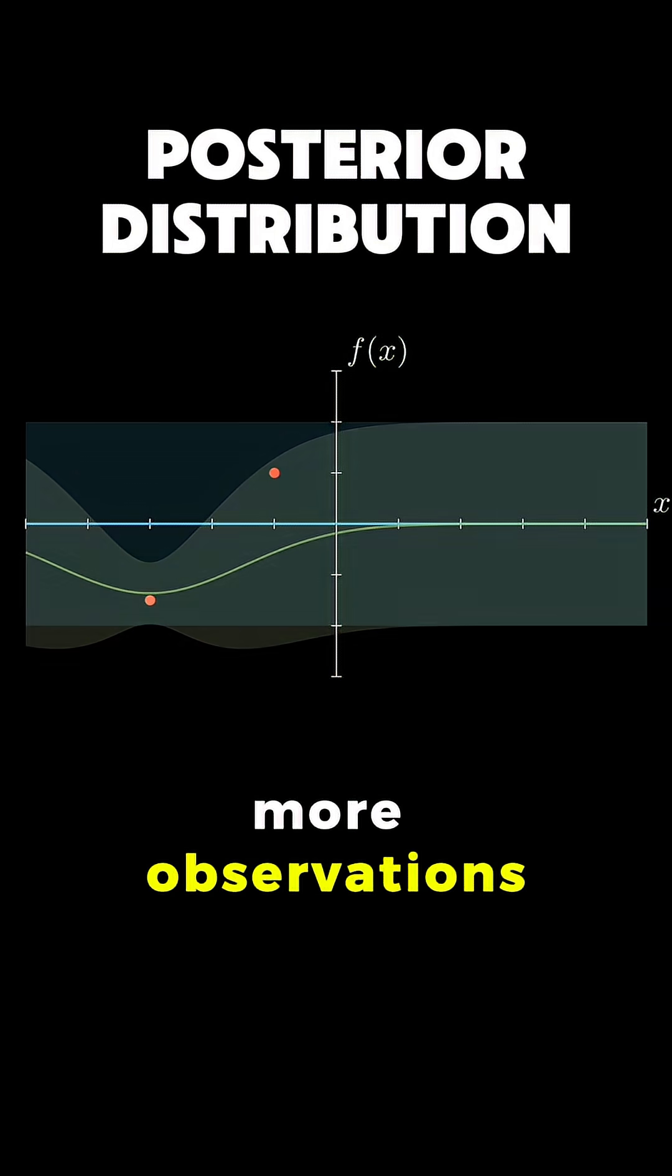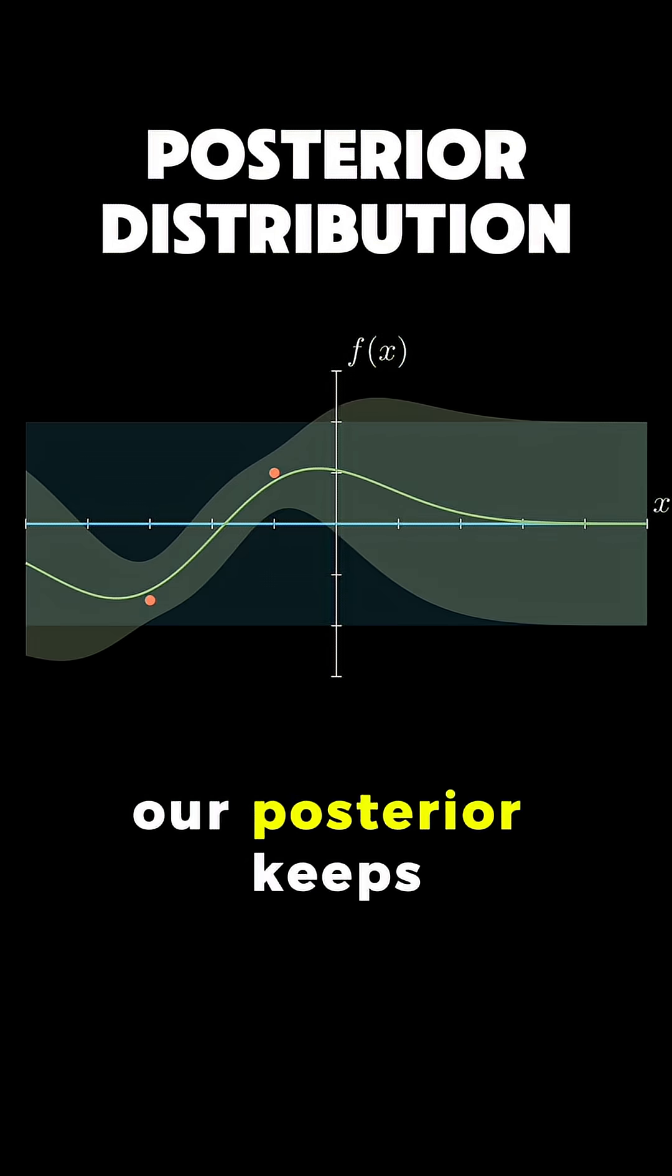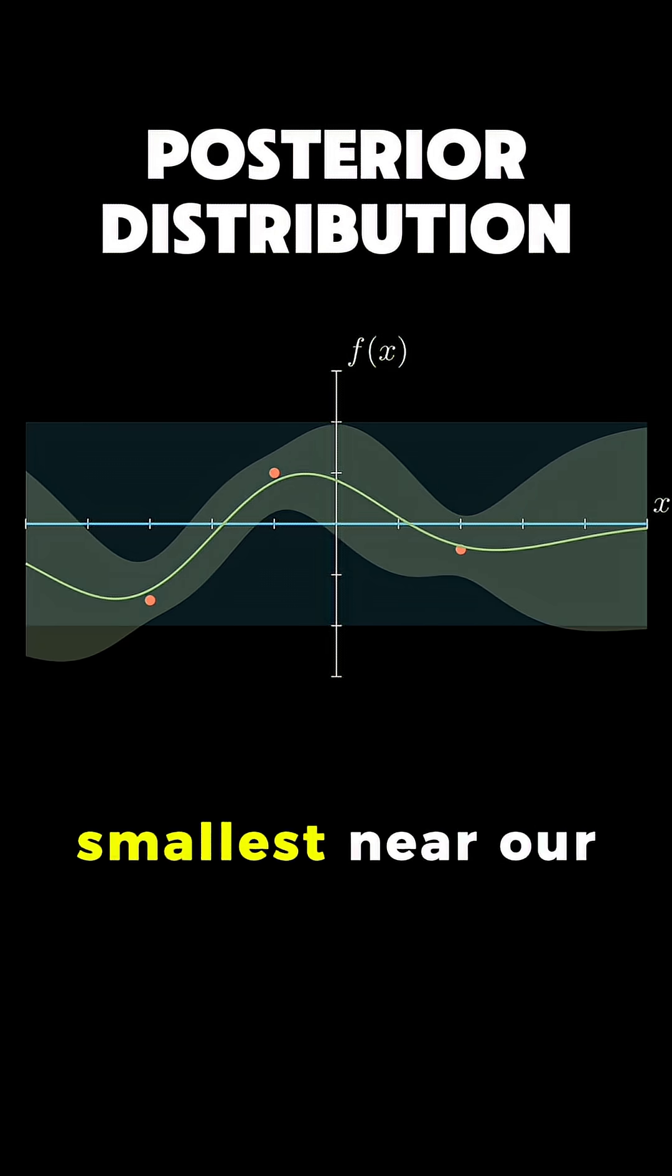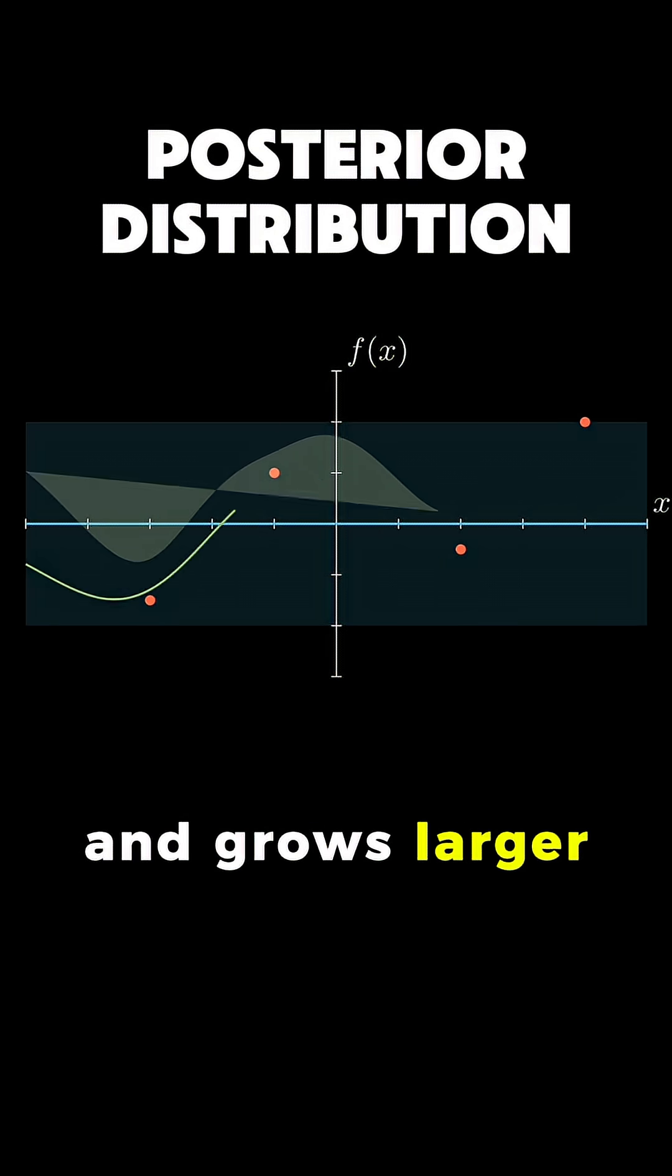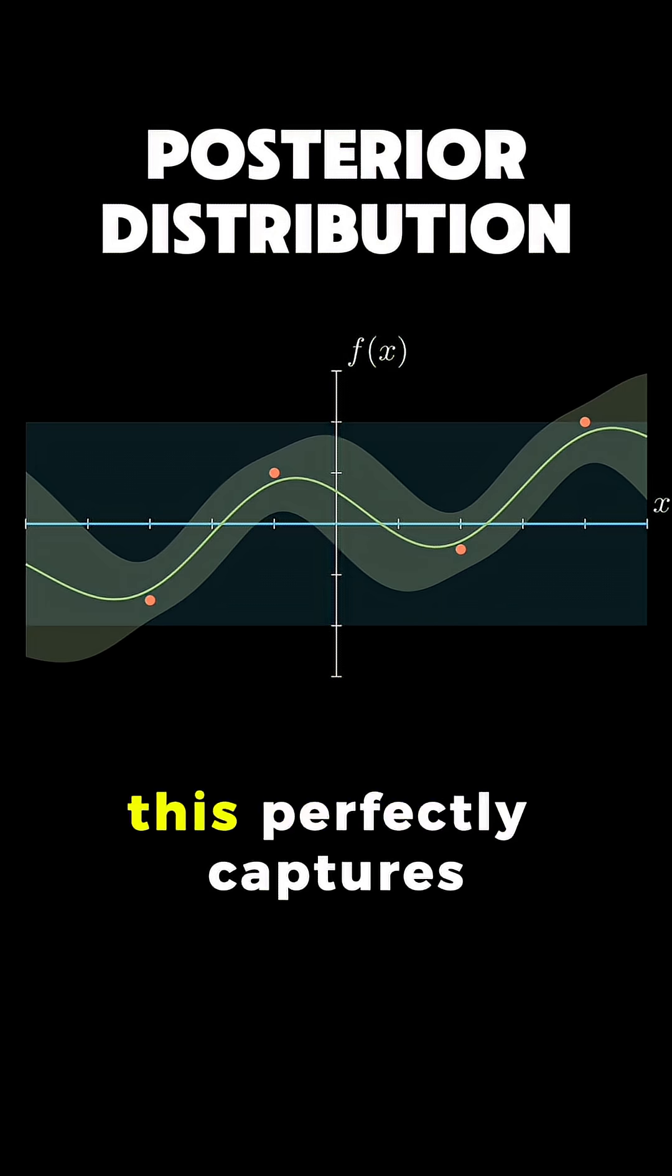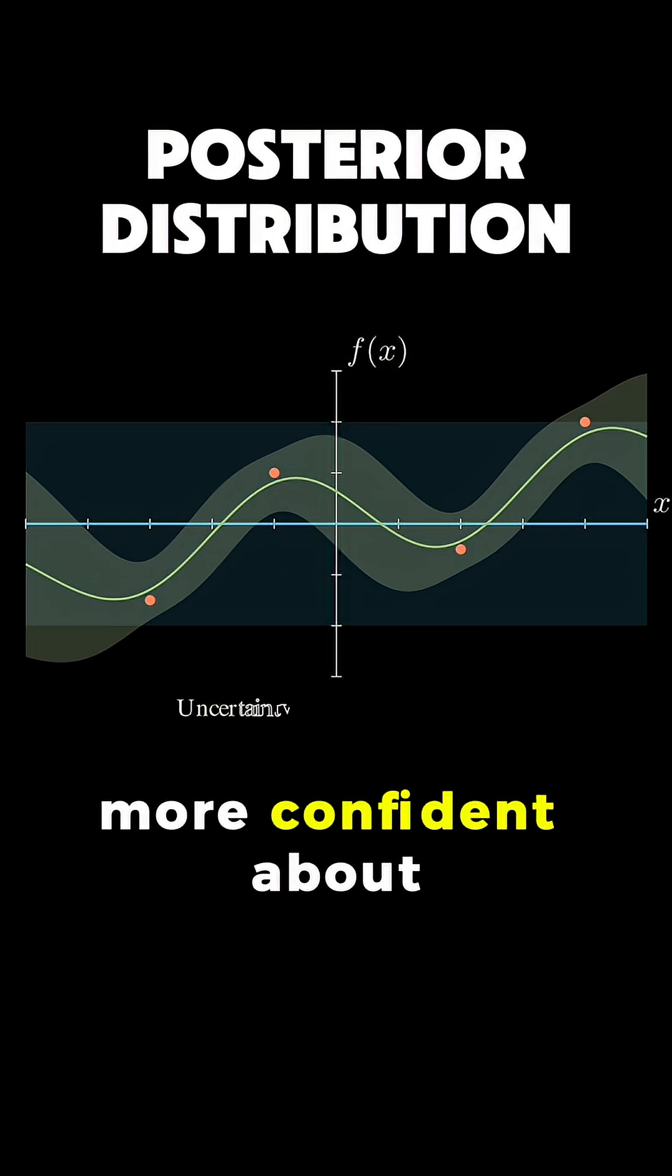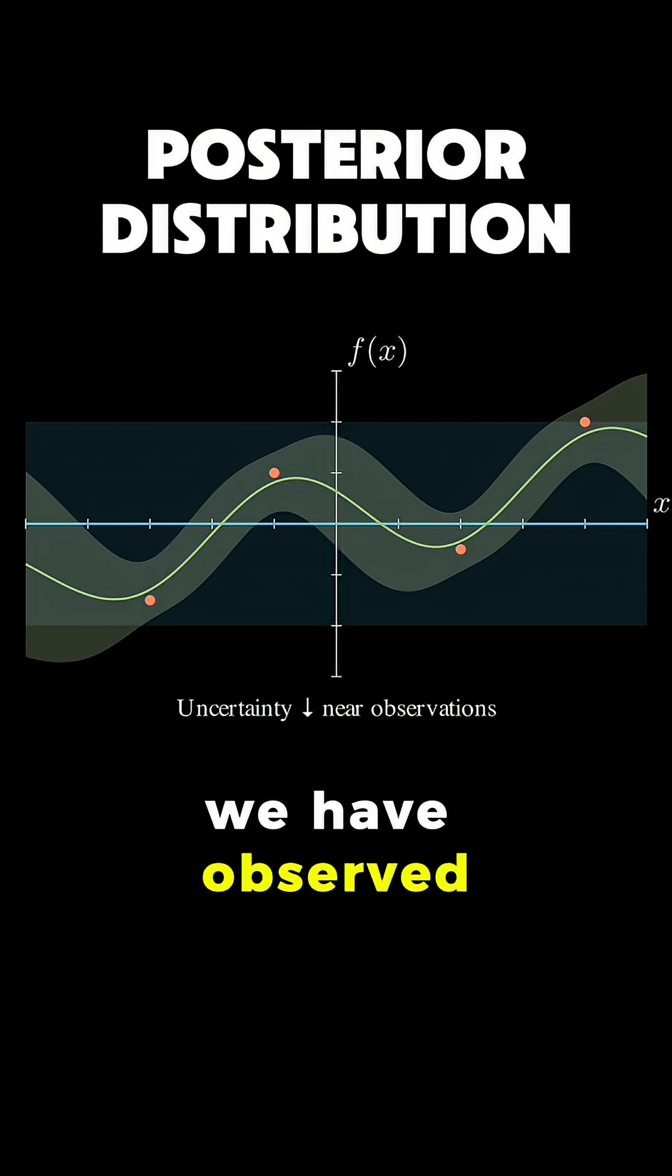As I add more observations, one by one, our posterior keeps updating. The uncertainty is smallest near our data points and grows larger as we move away. This perfectly captures our intuition that we are more confident about areas we have observed and less confident about areas we haven't.